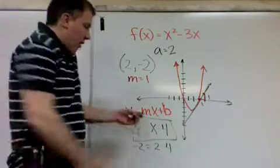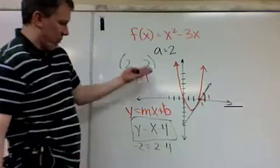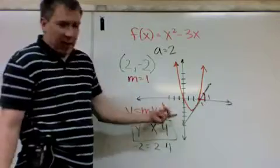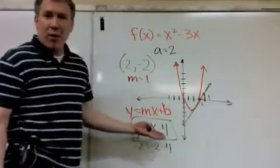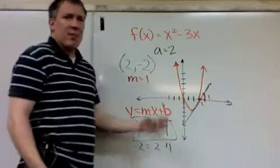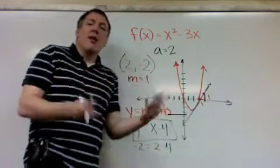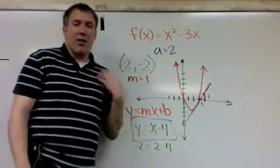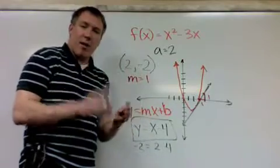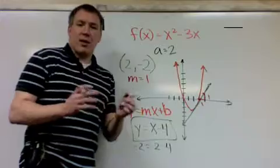Looking at the graph, the y-intercept might actually be closer to -5 than -4, and the slope probably isn't exactly 1 — but that's okay, it's just an estimate. We're just trying to get the idea of the slope of the tangent line right now. And that's the whole lesson: approximate the slope and write an equation that approximates the actual equation of the tangent line.